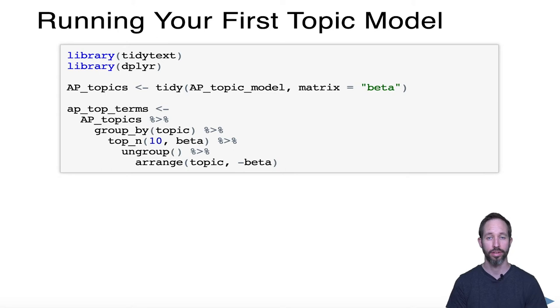Now we can use the tidy text package to clean up some of the results and some dplyr. Basically what we're doing is pulling out the betas. Those are the probabilities of each word being associated with each topic. We're grouping them, counting the top 10 by topic, and creating a new dataset that has each topic and the top 10 words associated with that topic.